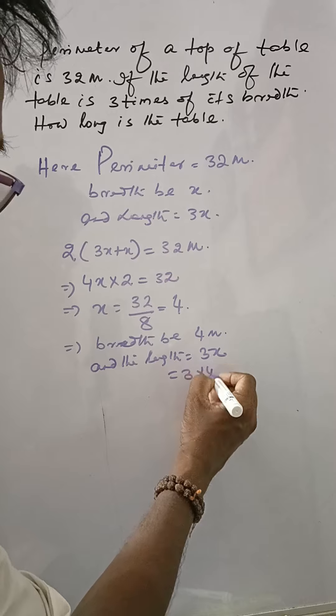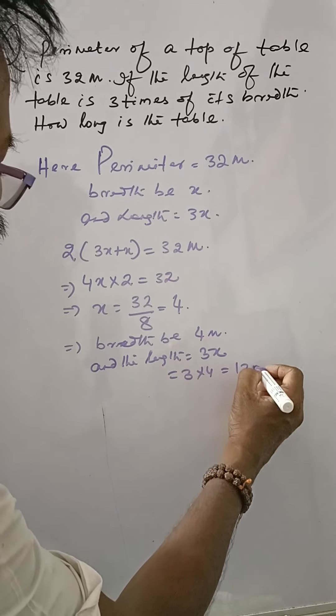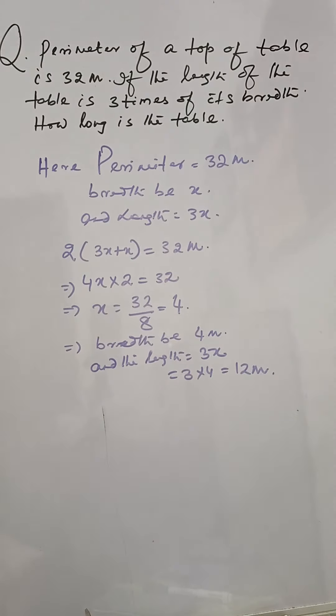3 into 4 equals 12. 12 meters is the answer.